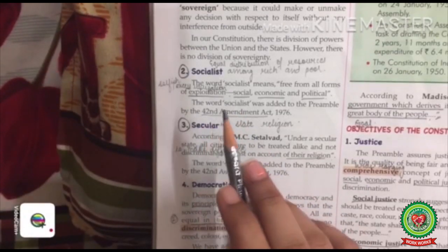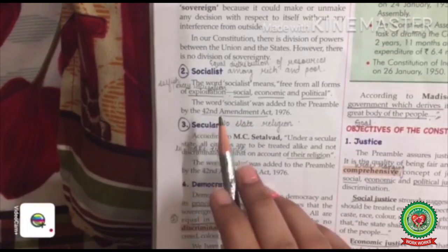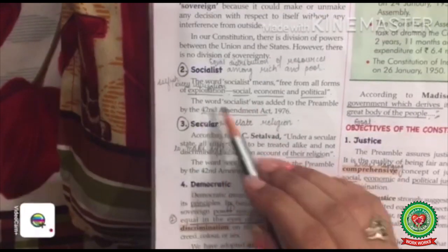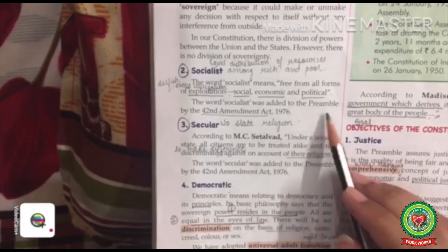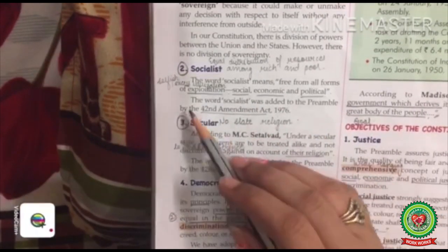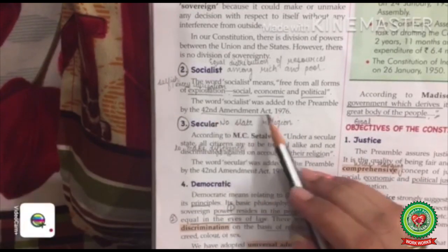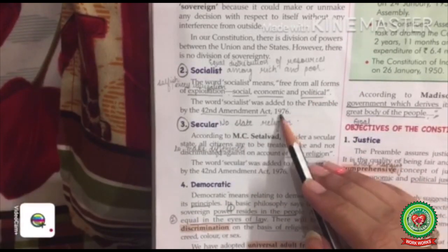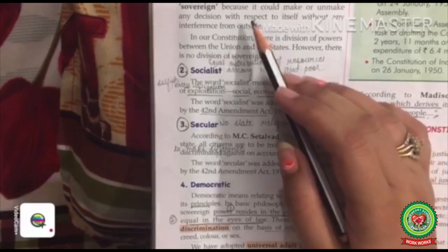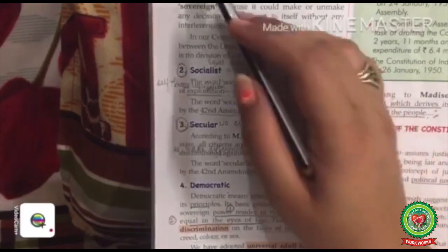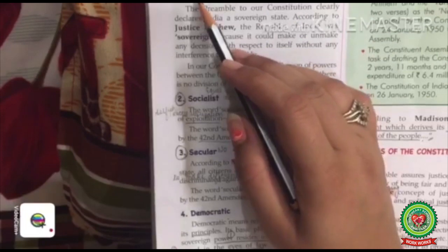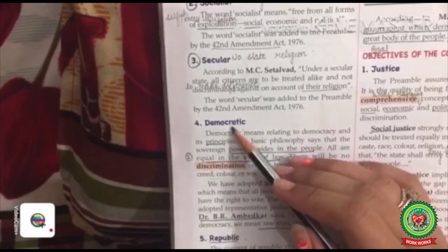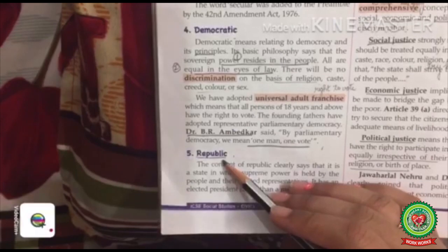The word Socialist was added to the Preamble by the 42nd Amendment Act 1976. Before this amendment, the Preamble of the Constitution stated India as a sovereign country, a democratic country, and a republic country.